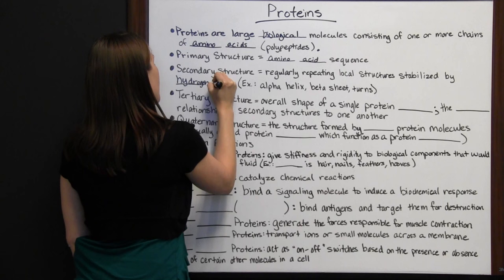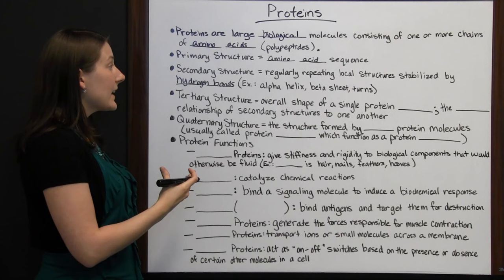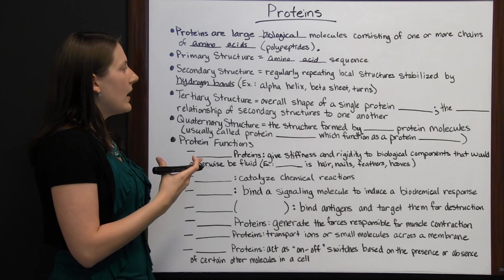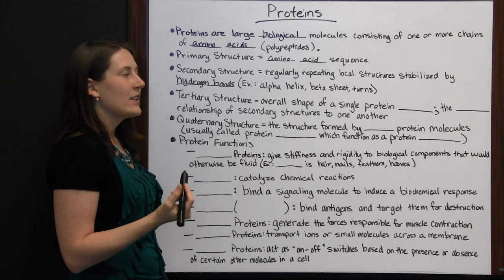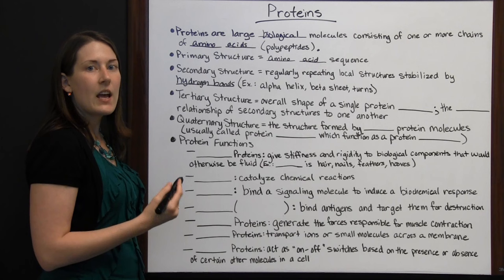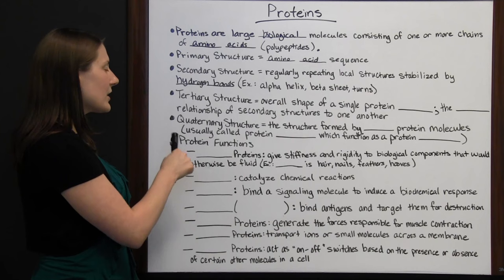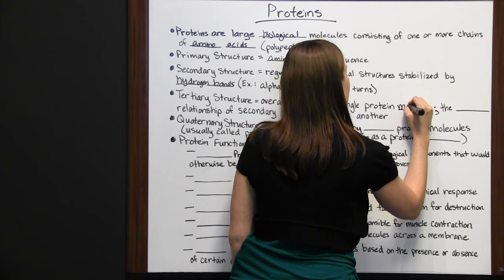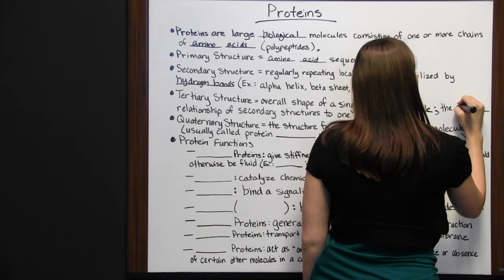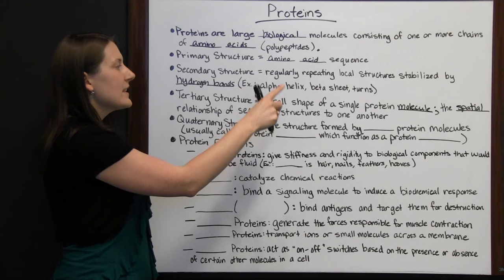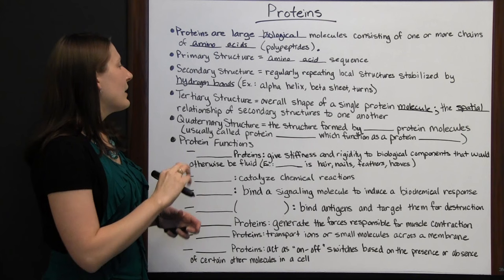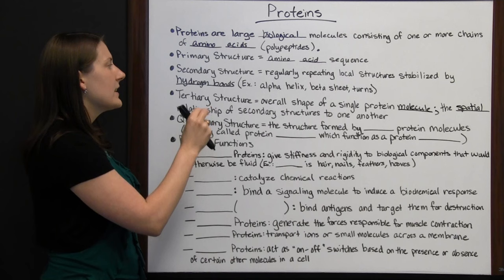The secondary structure is the regularly repeating local structures stabilized by hydrogen bonds. Examples include the alpha helix, beta sheet, and turns — different shapes proteins take when a few join together. The tertiary structure is the overall shape of a single protein molecule, referring to the spatial relationship of secondary structures to one another.